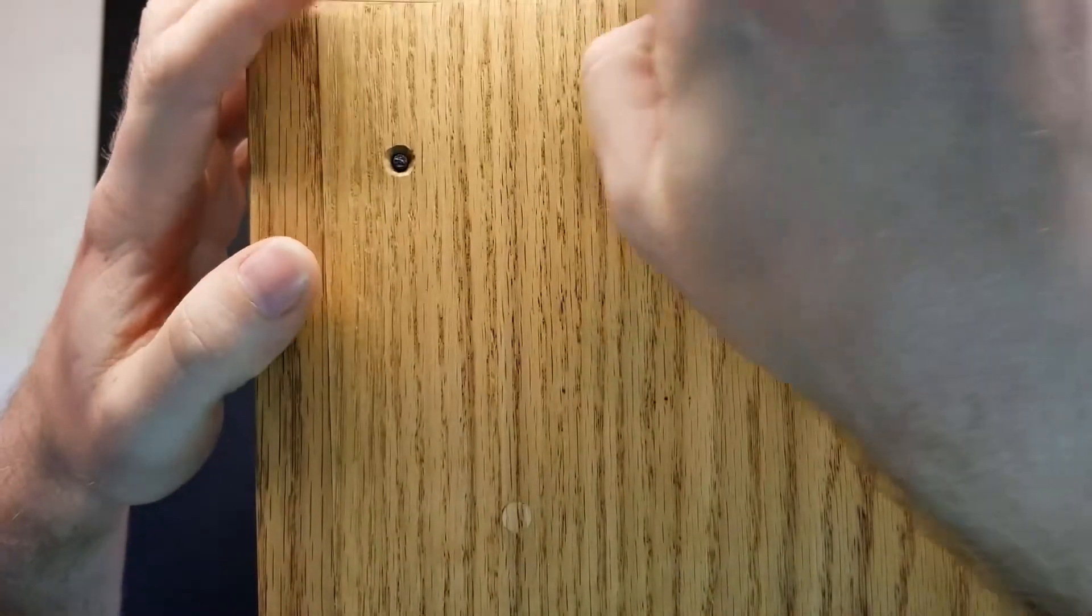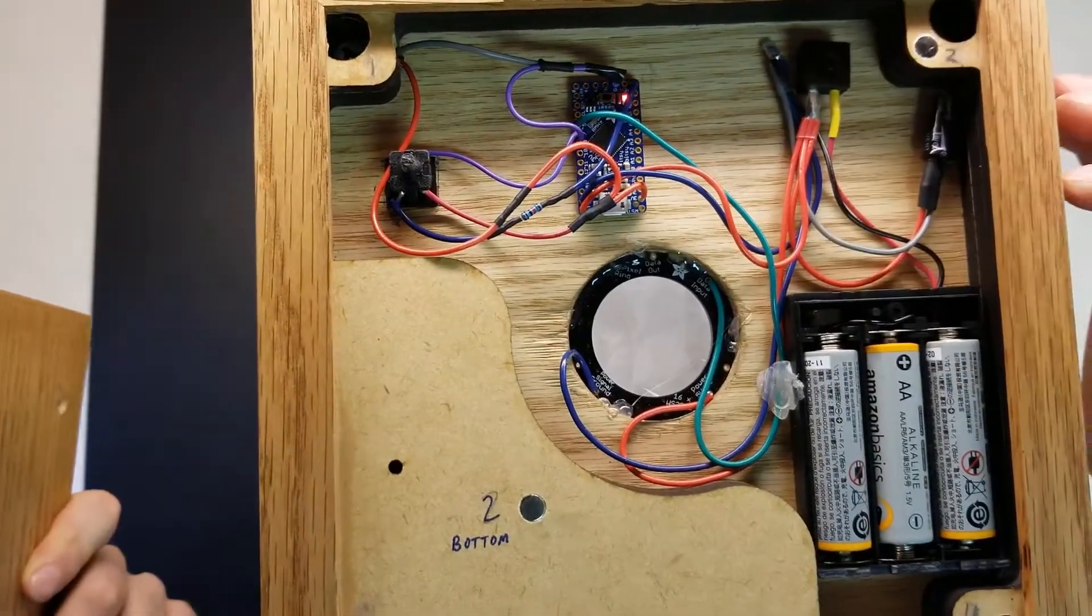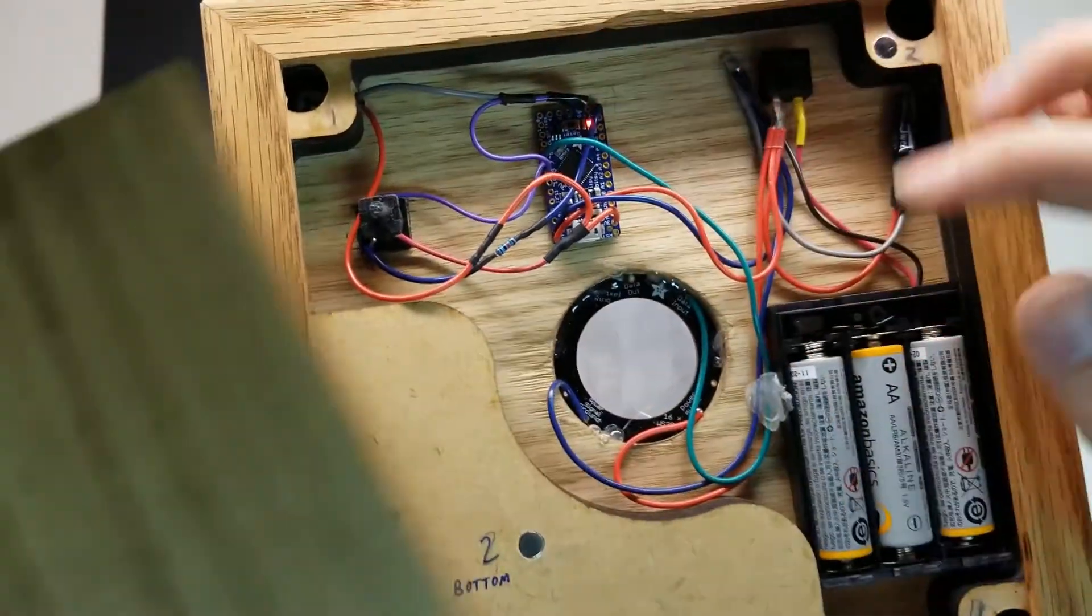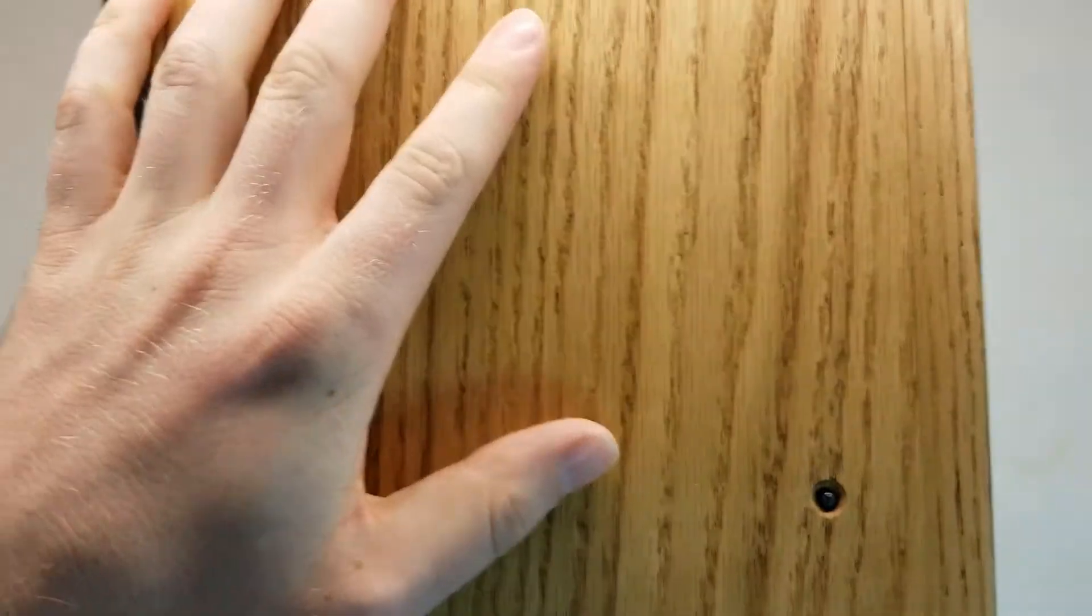So to start with, on operation, each end has a magnetic door that opens up and then there's a main power button. When that power button is turned on, this light turns on on the Arduino board. Go ahead and turn the other side on.